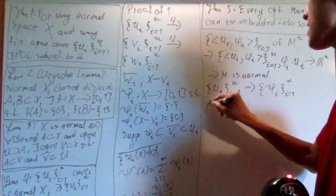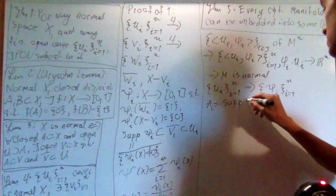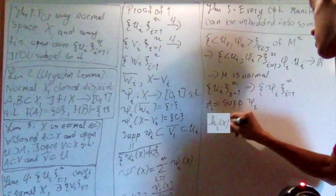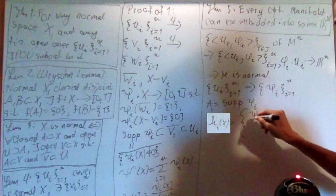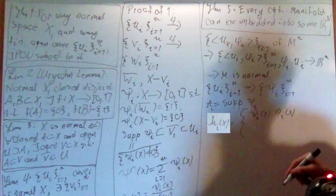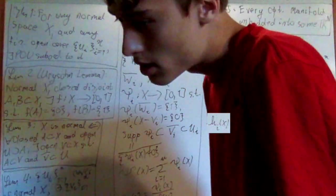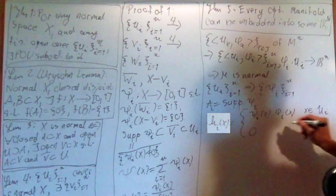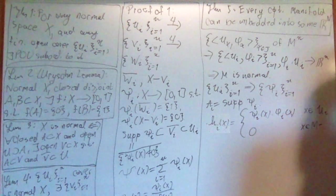And then what we'll do is we'll let a i equal to the support of psi i. And then we'll define a function, h i of x, which is going to be equal to, well, psi i of x times the phi i of x, as long as x is an element of u i. And then it's going to be 0, the 0 vector, as long as x is an element of the manifold, removing a i.